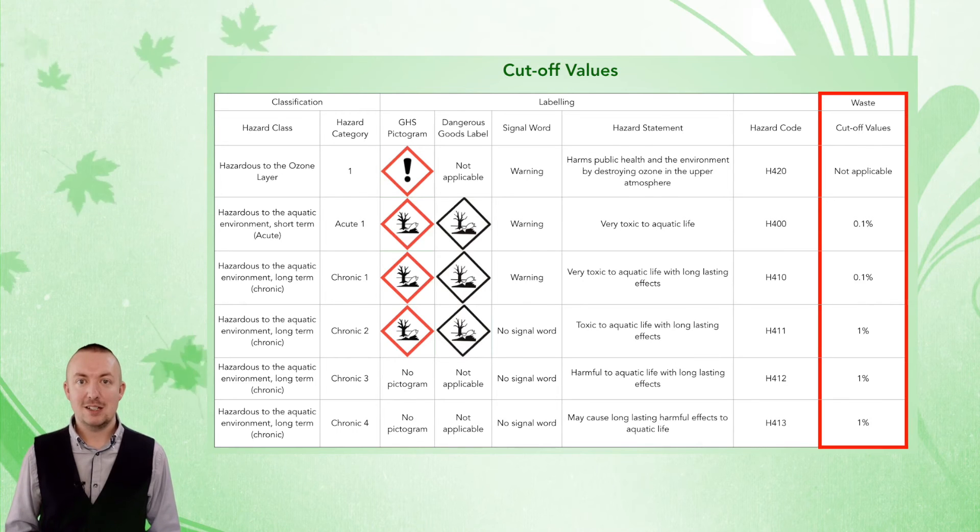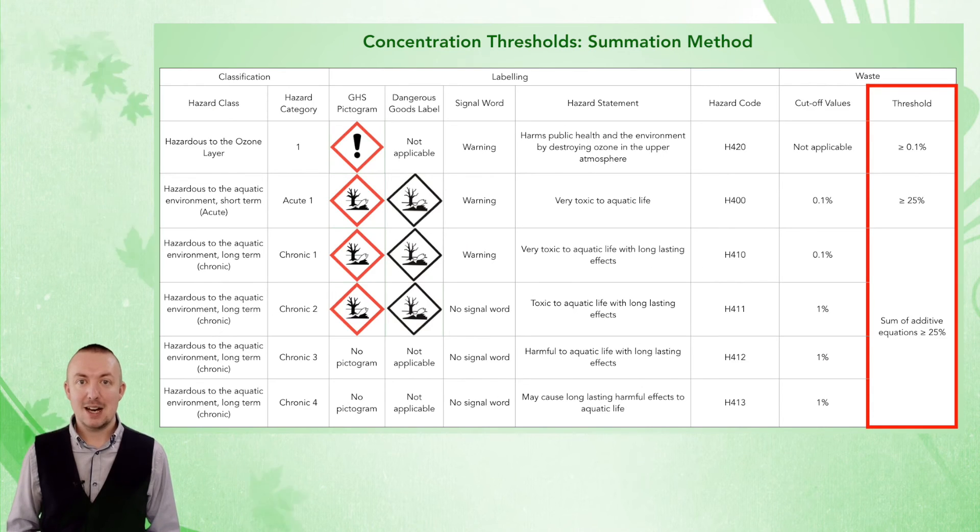For wastes containing substances which may be hazardous to the ozone layer or have an aquatic acute hazard, there are clearly defined thresholds at or above which those substances will contribute to the waste being classified as HP 14.